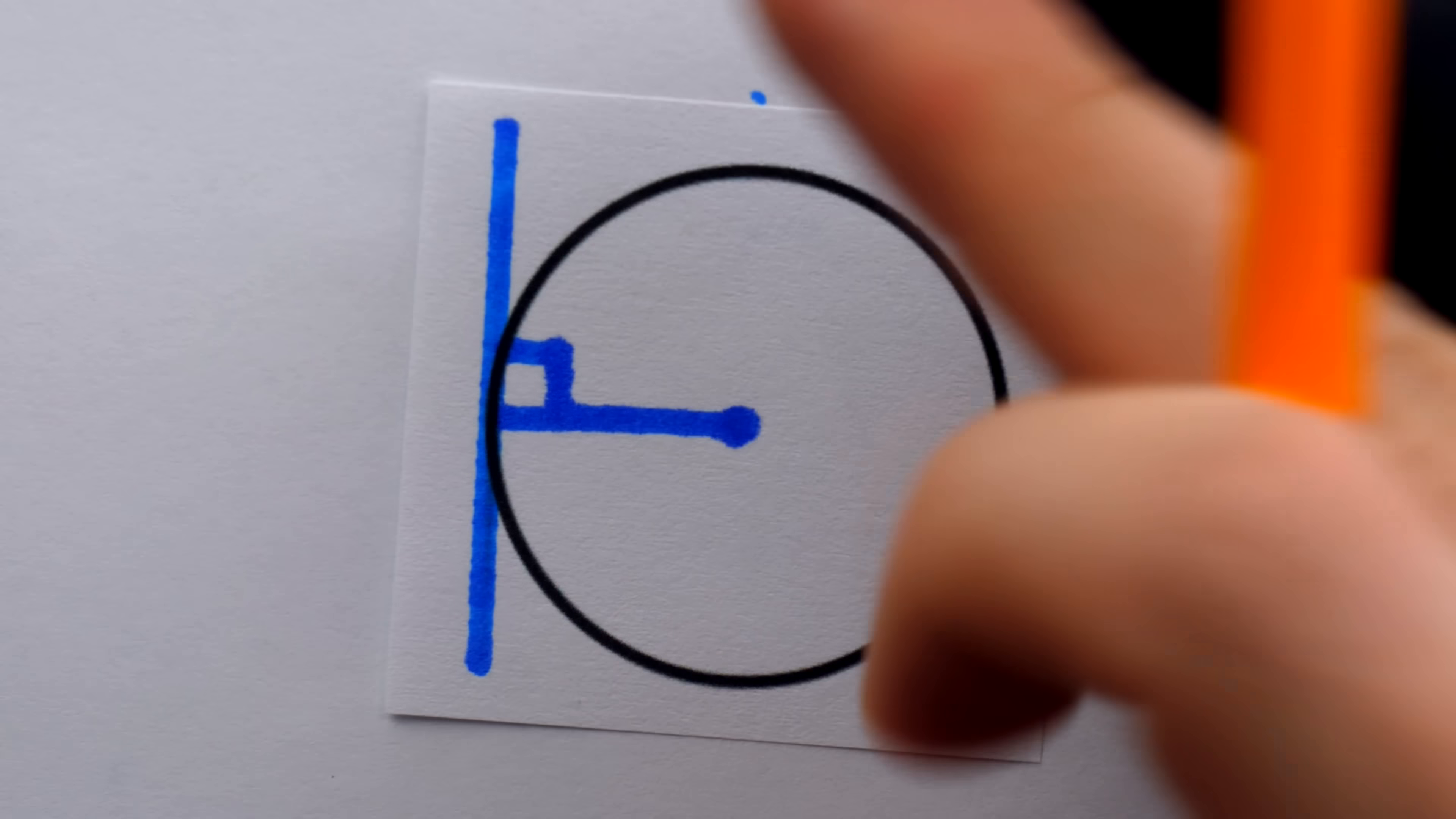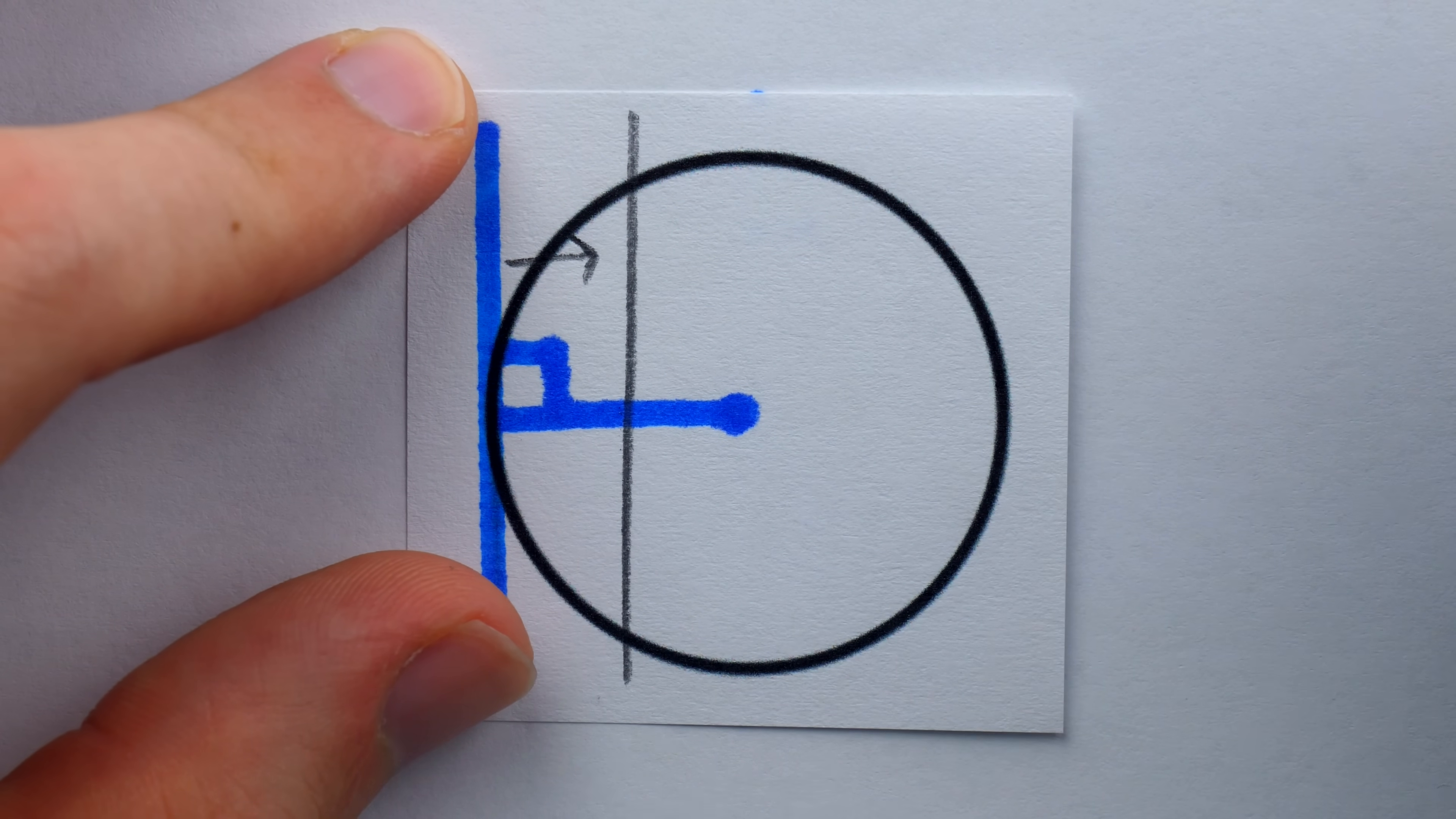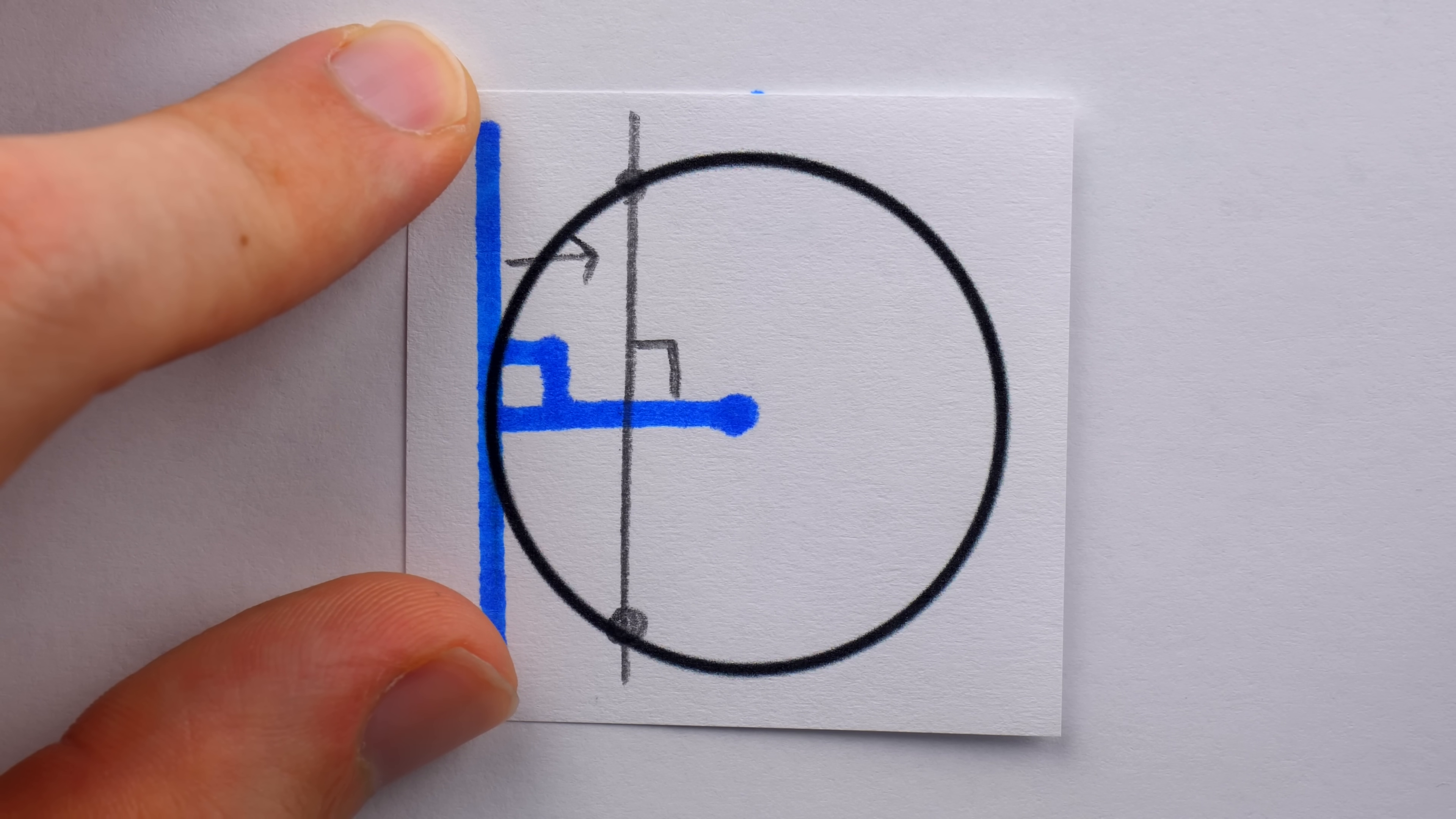But then imagine we slide that tangent line further so that it's actually coming into the circle. If we've just moved this tangent line into the circle, then the part of the line that lies inside the circle is what's called a chord of the circle. And of course, since this is that same tangent line just moved elsewhere, the radius is still perpendicular to this line and the chord.